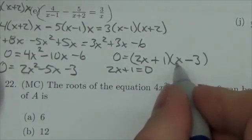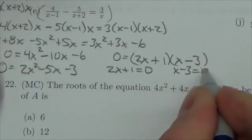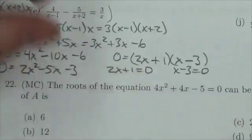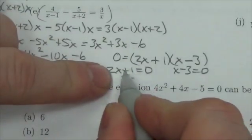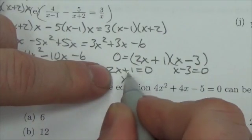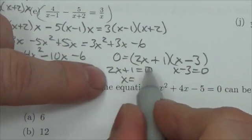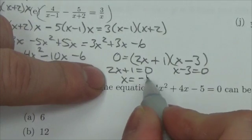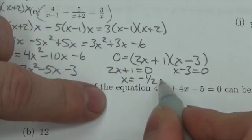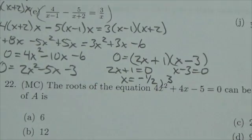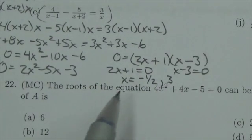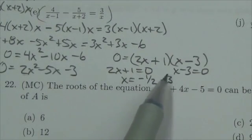Now either 2x plus 1 equals 0, or x minus 3 equals 0. One of those two factors must be equivalent to 0. If this is true, bring the 1 over, make it negative, subtract it from both sides, so I get 2x equals negative 1, then divide by 2, so negative 1 half. Or bring the 3 over, x equals positive 3. So there's my two roots: negative 1 half and 3.